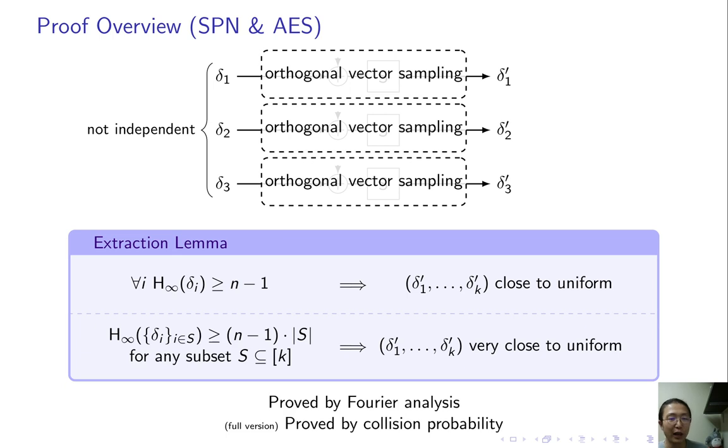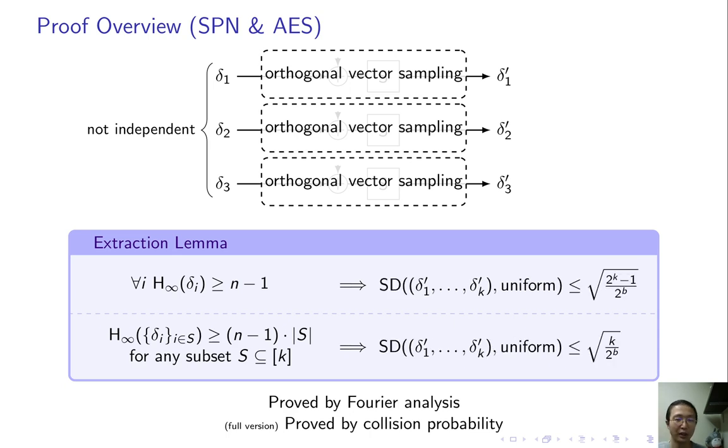So we also have a stronger extraction lemma. It says if every subset of input blocks has high min entropy, again they can have any correlation, as long as any subset of input blocks has high min entropy, the output will be very close to uniform. So quantitatively, this improves exponentially in K.